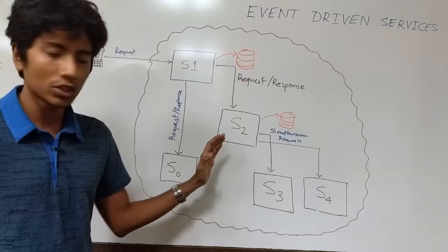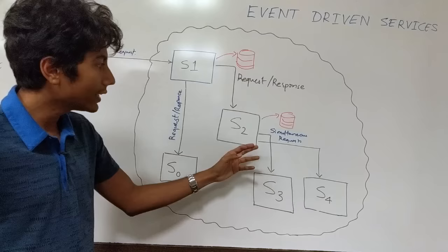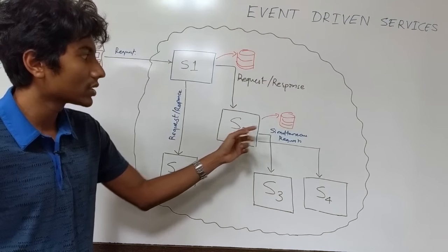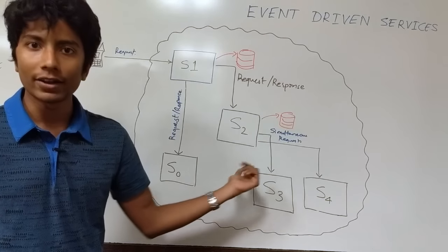The important thing to notice here is that the order of these two messages don't matter. S2 can get the message first or S0 can get it first. Similarly, S3 and S4 need to get messages from S2 after it's done its processing. And the order of these two messages don't matter either.